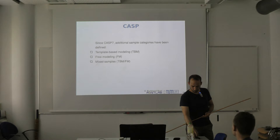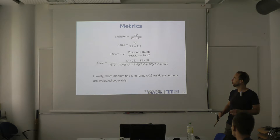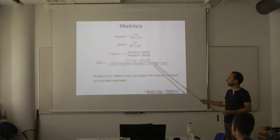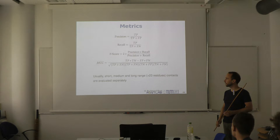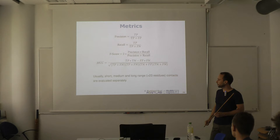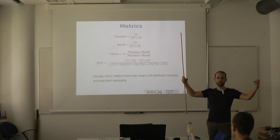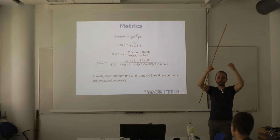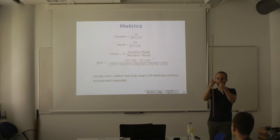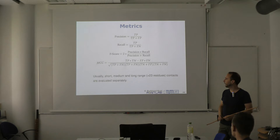In terms of metrics, contact prediction involves binary results — true positives, false positives, etc. The usual metrics are precision, recall, F-score, and MCC (Matthews correlation coefficient). MCC is especially interesting because it factors in all possible outcomes including true negatives. We also differentiate between short, medium, and long-range contacts. Long-range contacts — residues more than 23 apart on the sequence level — give the best constraints for the folding process, since knowing a contact between very distant residues restricts the conformational freedom significantly.